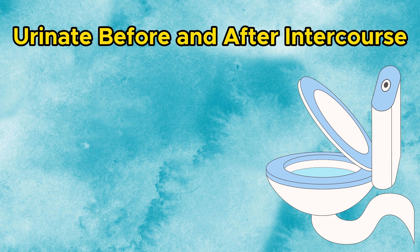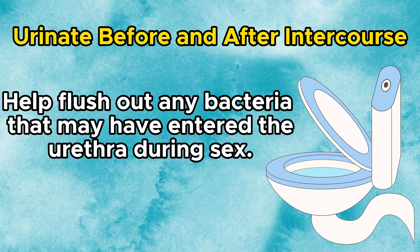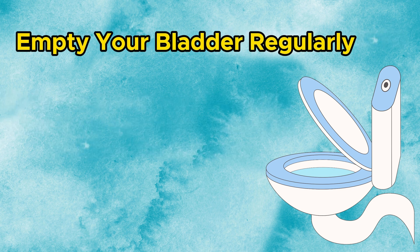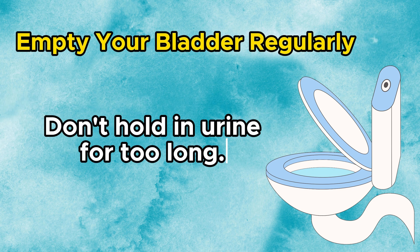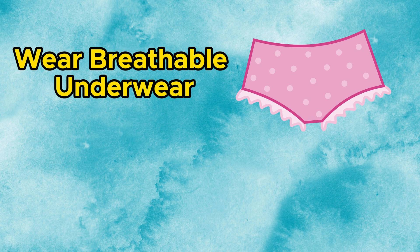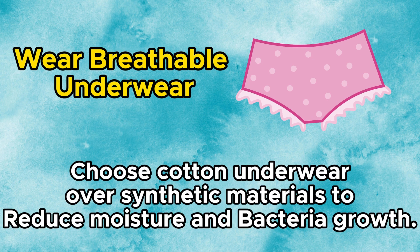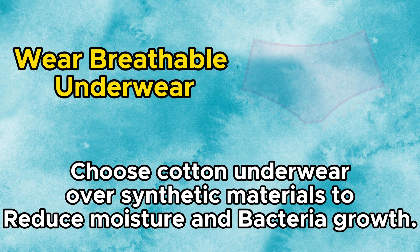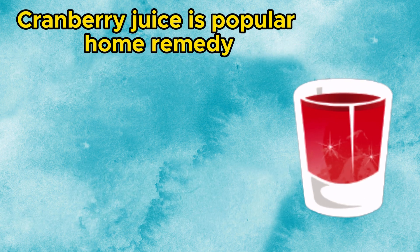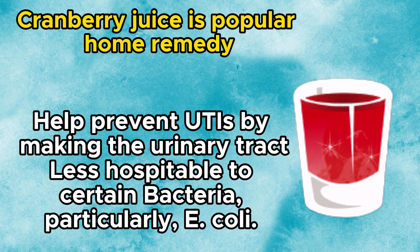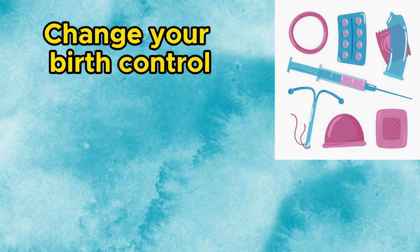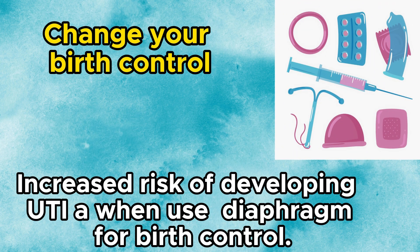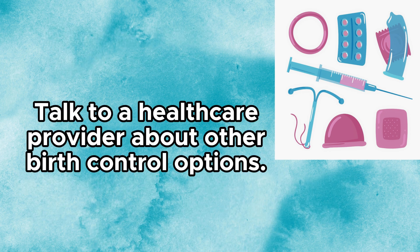Urinate before and after intercourse — this can help flush out any bacteria that may have entered the urethra during sex. Empty your bladder regularly and don't hold in urine for too long. Wear breathable underwear — choose cotton underwear over synthetic materials to reduce moisture and bacteria growth. Cranberry juice is a popular home remedy that may help prevent UTIs by making the urinary tract less hospitable to certain bacteria, particularly E. coli. If you use a diaphragm for birth control, talk to a healthcare provider about other birth control options, as it may increase your risk of UTIs.